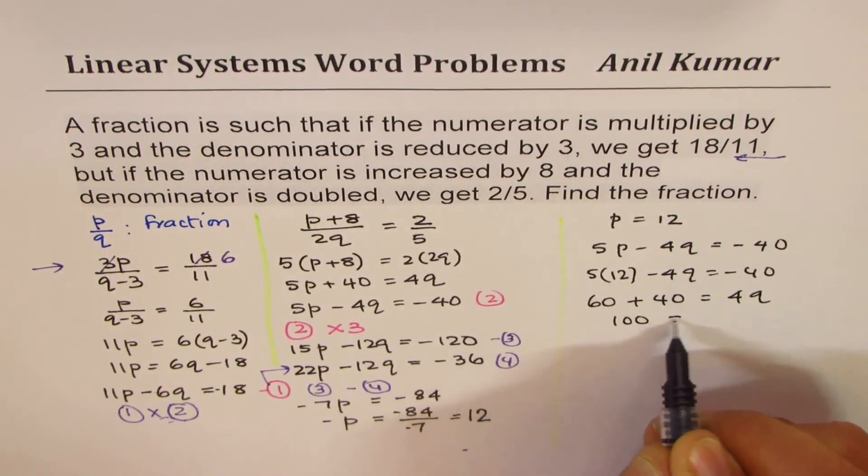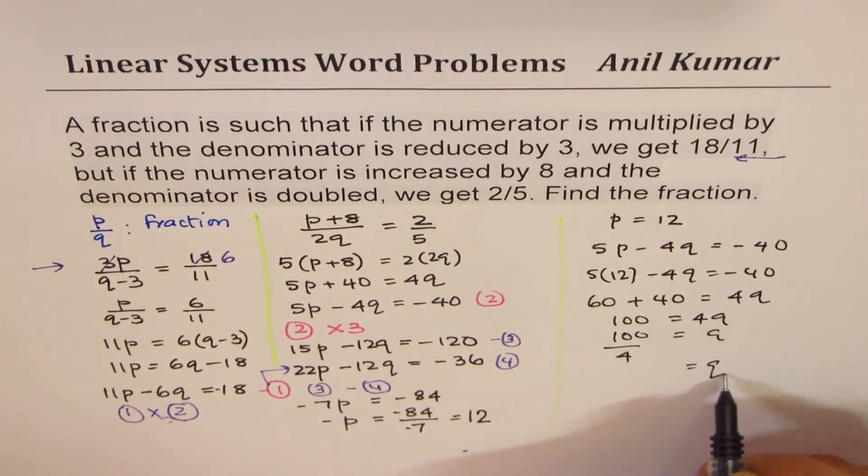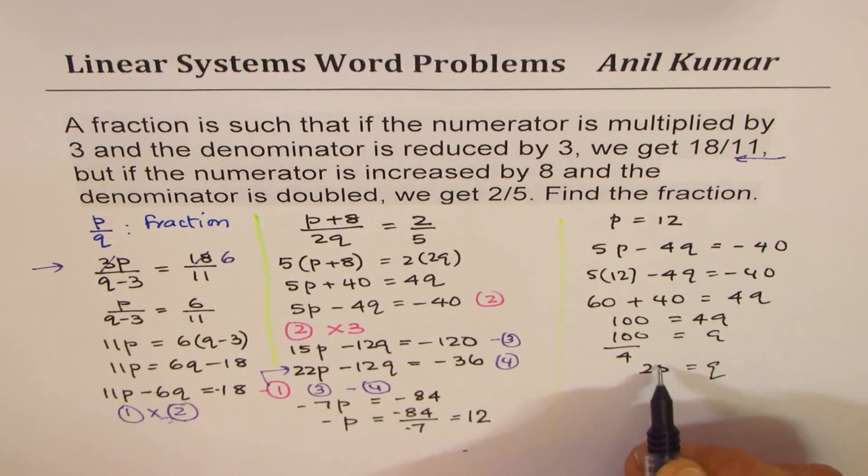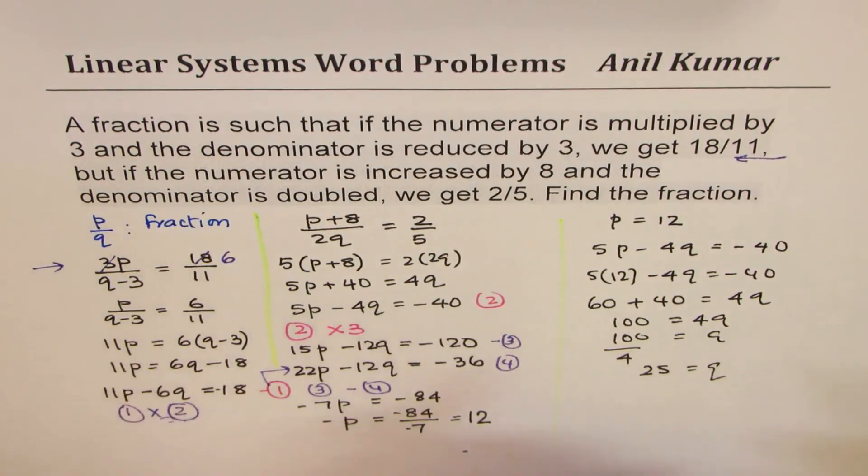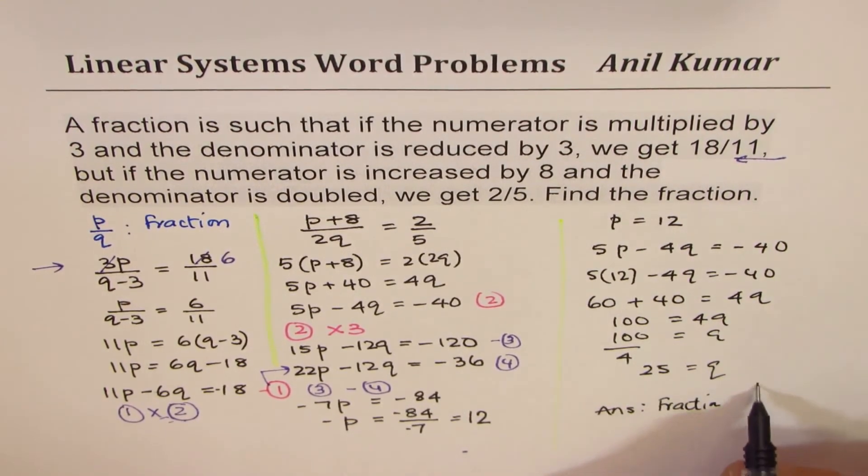Which is 100 equals to 4q. So q is 100 divided by 4, and so we get q equals to 25. And there we get our answer, p over q. So our answer is, the fraction is, p is 12 and q is 25.